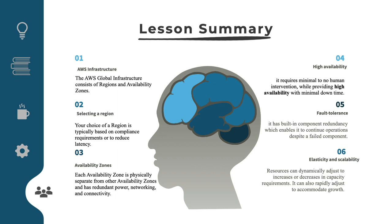What we learned in this lesson: AWS infrastructure is divided into regions and availability zones. Your choice of region is typically based on compliance requirements or reducing latency. Each availability zone is physically separate from other availability zones and has redundant power, networking, and connectivity. The AWS global infrastructure has several valuable features: it is elastic and scalable, it is fault tolerant, and it requires minimal to no human intervention while providing highly available and scalable services. Thank you, and see you in the next lesson.